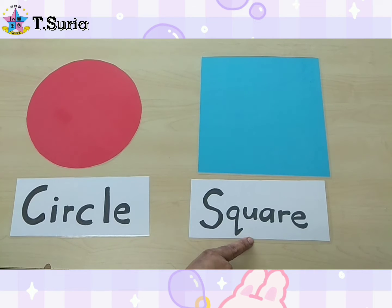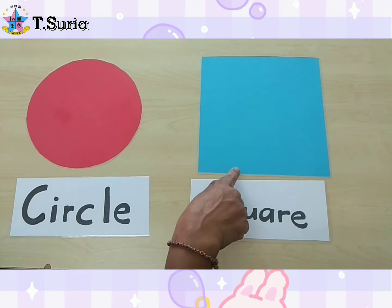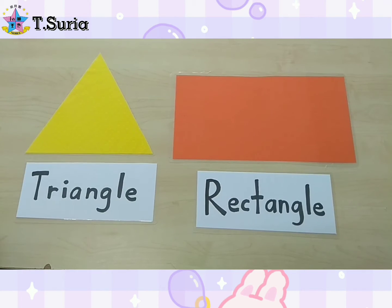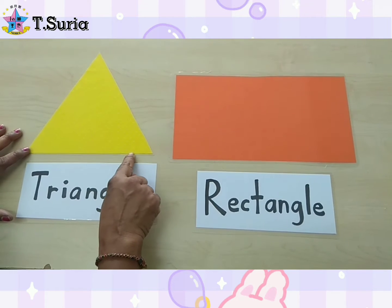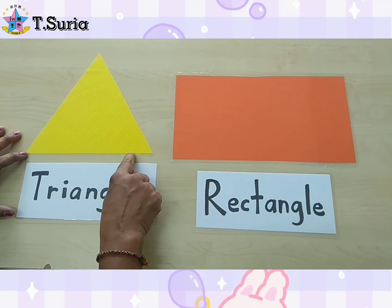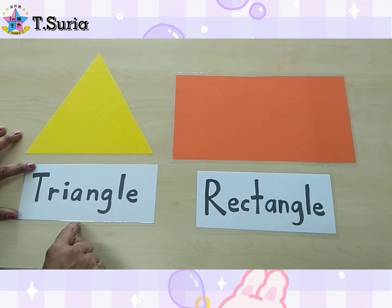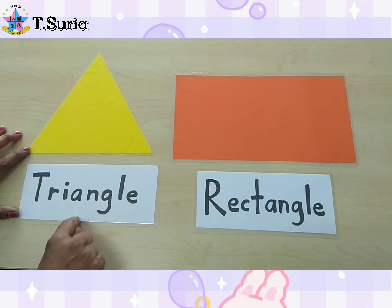This is a square. Square! This is the next shape. What shape is this? Triangle, triangle!